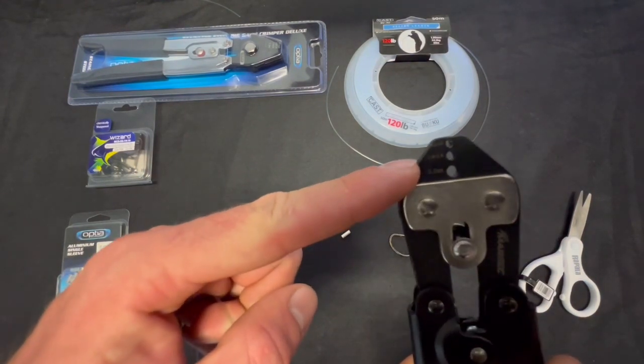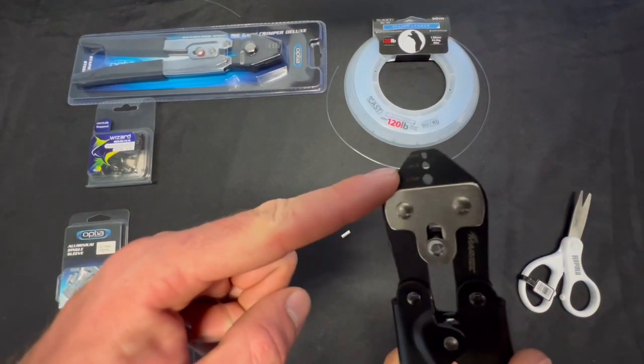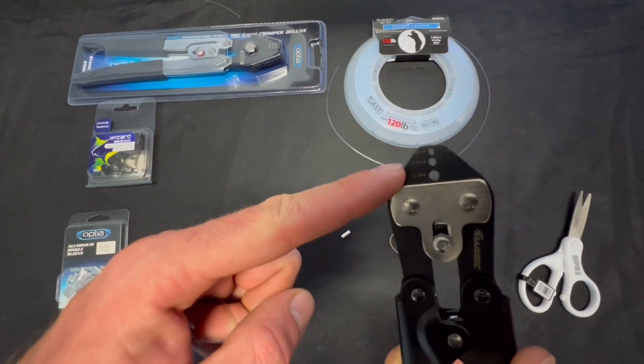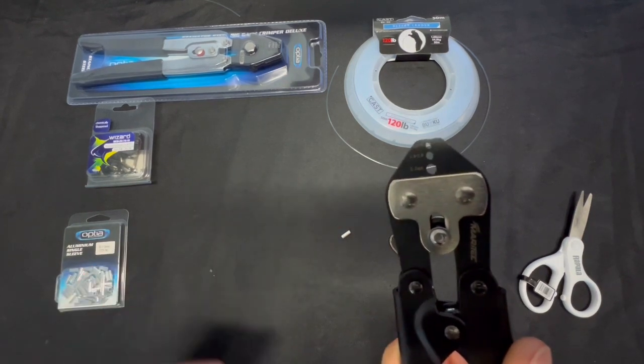Each hole designates a different size crimp that it will do. Those little crimp pliers there will do from around about a hundred pounds up to around about three or four hundred pounds maybe.